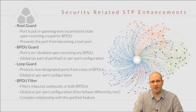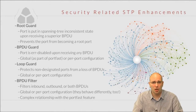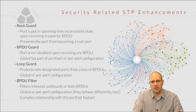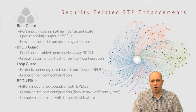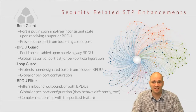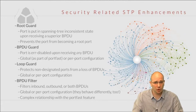Security related spanning tree enhancements include root guard, BPDU guard, loop guard, and BPDU filter. Security should be taken here in the broadest possible terms — some of these are more like precautionary features designed to prevent bad things from happening in the network, and not necessarily to protect the network from a specific attack, which might be the implicit understanding of the word security in this context.